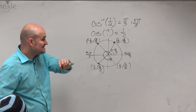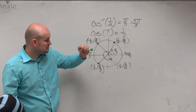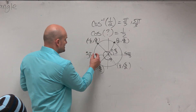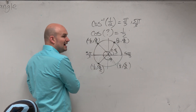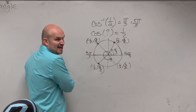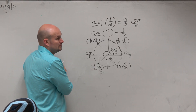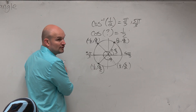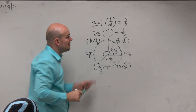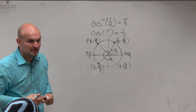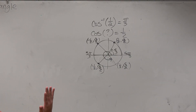So what we see here is that the only answer, if we look at our restrictions, the only answer has to be between 0 and pi. So what is the only angle that fits within that restriction? Pi over 3. And guess what? Plug it into your calculator — cosine inverse of 1/2 is pi over 3.